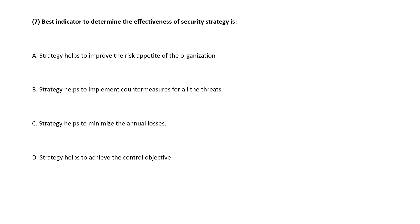Question 7. The best indicator to determine the effectiveness of a security strategy is — correct answer is option D. Strategy helps to achieve the control objective.